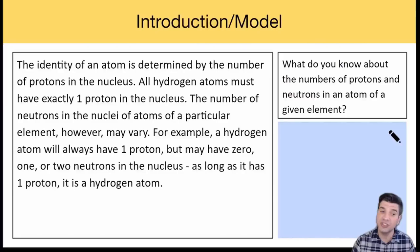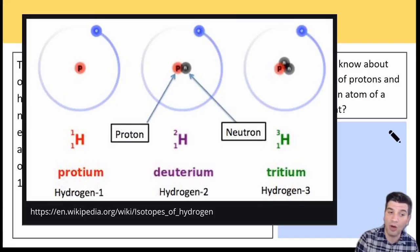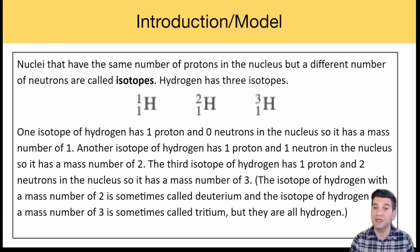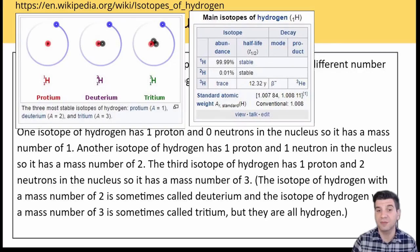The identity of an atom is determined by the number of protons in the nucleus. All hydrogen atoms must have exactly one proton in the nucleus. The number of neutrons in the nuclei of the atoms of a particular element, however, may vary. For example, a hydrogen atom will always have one proton, but it may have zero, one, or two neutrons in the nucleus. As long as it has one proton, it is a hydrogen atom. Pause the video and answer the following question: What do you know about the number of protons and neutrons in an atom of a given element?